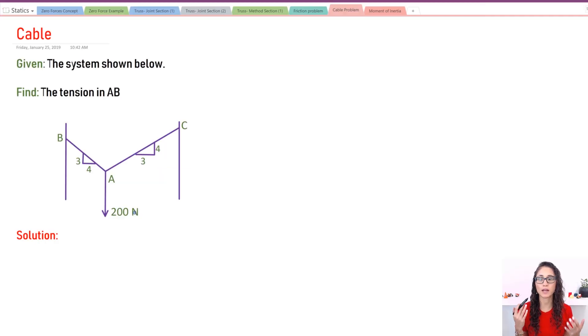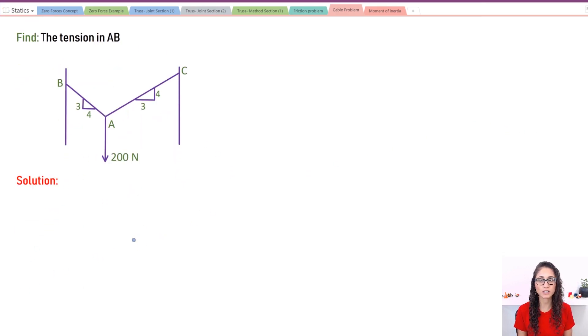Okay, so we're given this system and we need to calculate the tension at AB. This is a simple problem. First, let's draw the free body diagram, and then we're going to apply the equilibrium equations because this system is not moving, so all the forces on the X and Y direction have to be equal to zero. Let's draw the free body diagram.